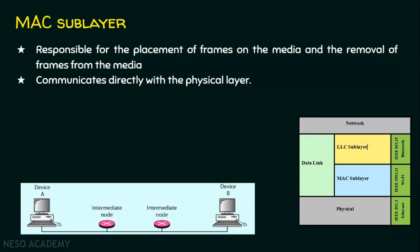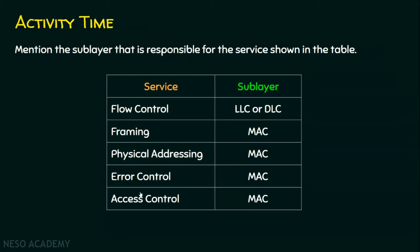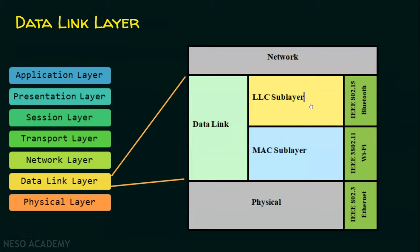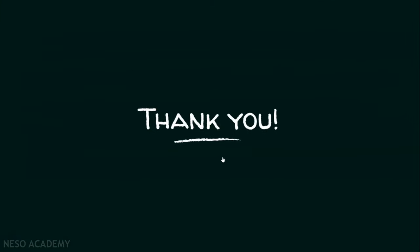There is an activity for you: mention the sub-layer responsible for each of the five services of the data link layer shown in the table. Flow control is done by the logical link control (LLC) or data link control (DLC) sub-layer. Framing, physical addressing, error control, and access control are handled by the MAC sub-layer. The data link layer has two sub-layers — LLC and MAC — and I hope you now understand their responsibilities. Thank you for watching.